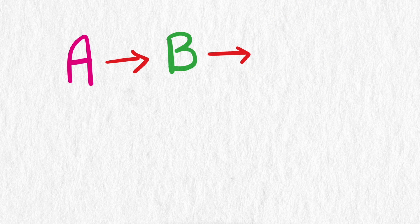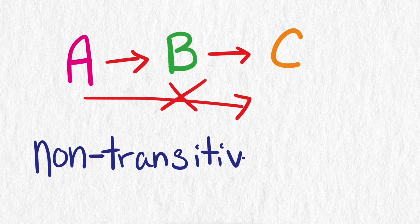A beats B, B beats C, but A doesn't beat C. These are called non-transitive dice.